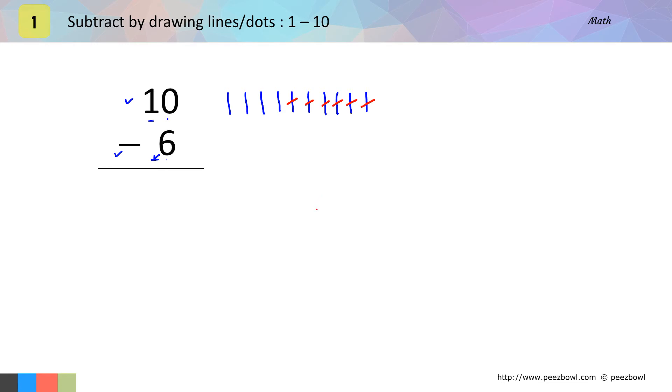After that, count only remaining lines or standing lines. We have 1, 2, 3 and 4 such lines. So, result of 10 minus 6 is 4. 4 is the answer. This was simple, isn't it?